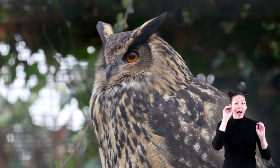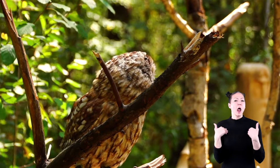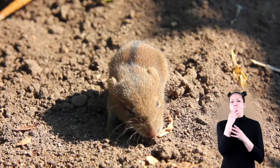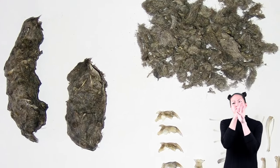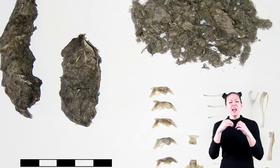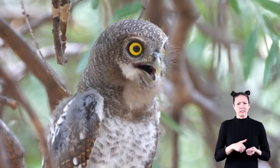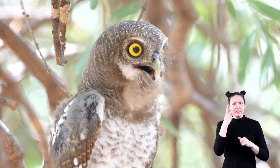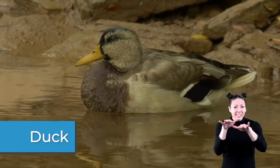Owls have been known to swallow smaller animals like a mouse whole. Owls then throw up pellets, which are the animal bones and fur that they could not digest. Owls can see well at night and are fantastic hunters.